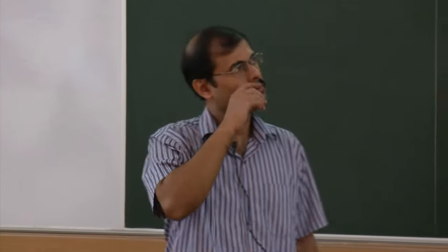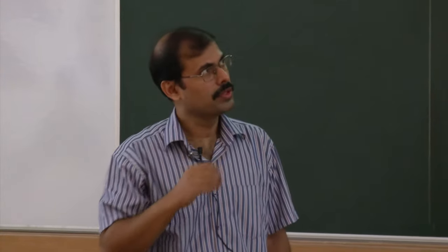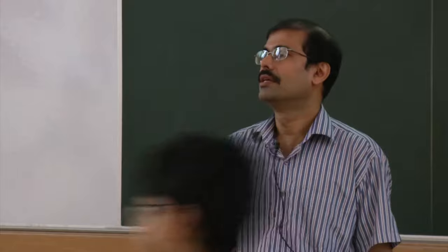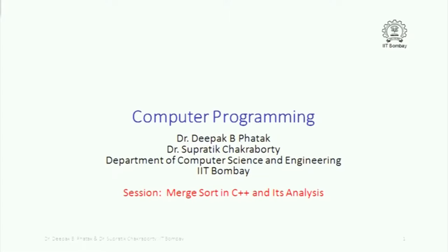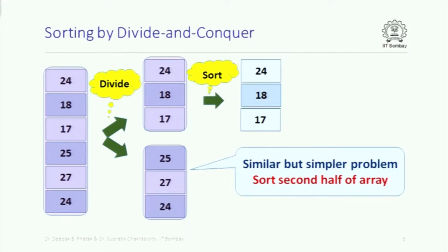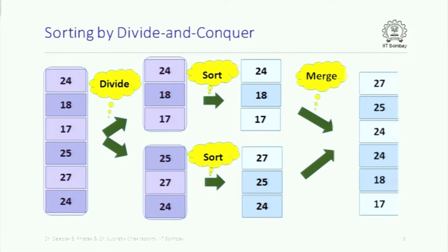We will continue from where we left off last time. We will go through it quickly and if there are doubts please stop me and ask. You have seen the basic idea of merge sort: we take an array, divide it into two parts, then sort each of the individual parts and then merge them back. This is what we saw last time.